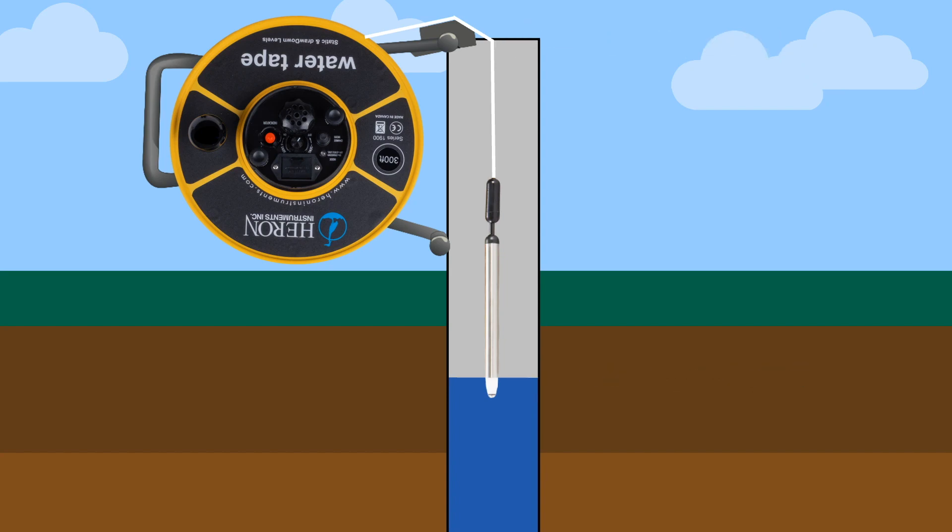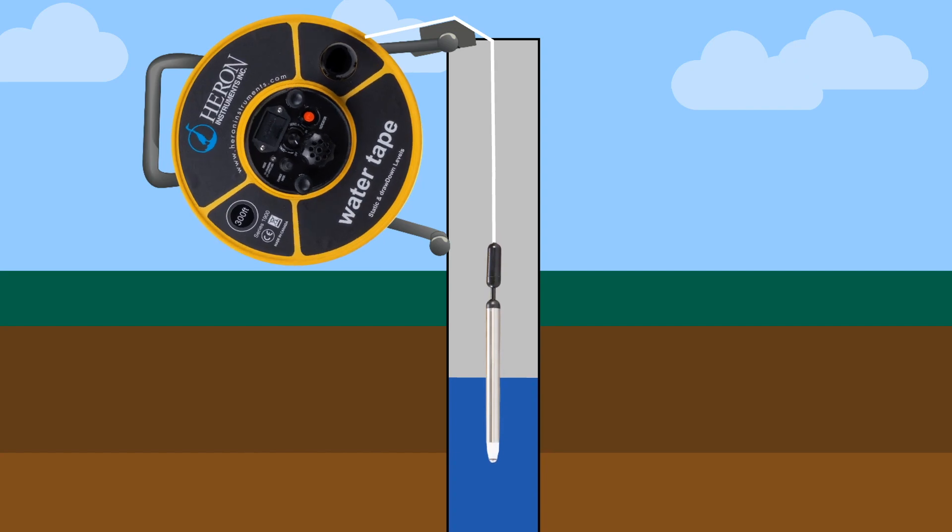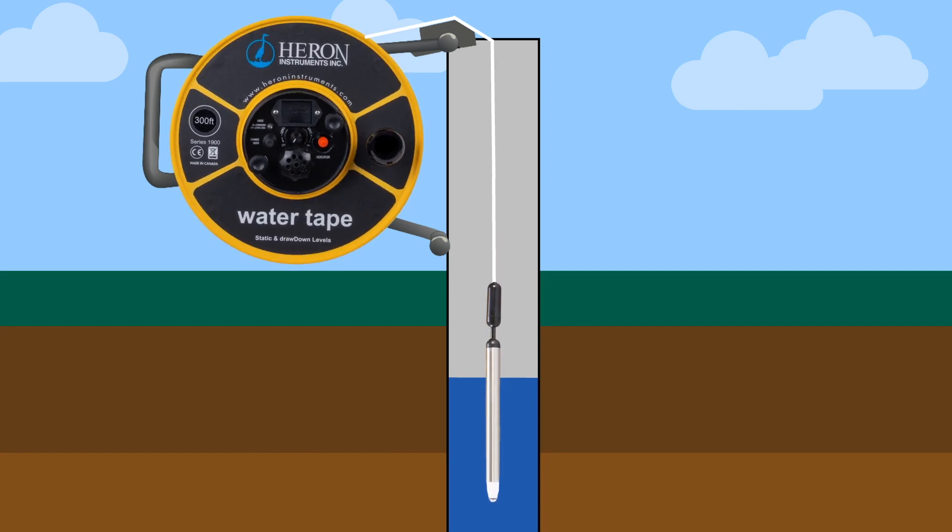If you would like to do drawdown calculations or pump tests, lower the probe to the desired depth shown on the tape, where you want to pump the water to. The meter will be sounding. Tighten the brake. Then push the mode button once and the meter sounding will stop. The unit is now in drawdown mode.